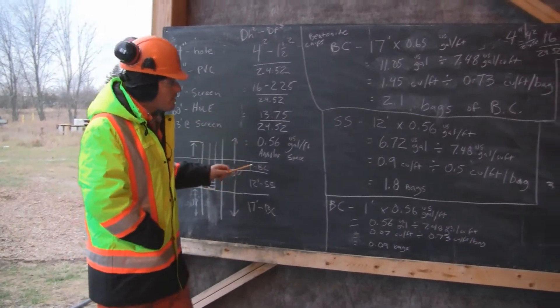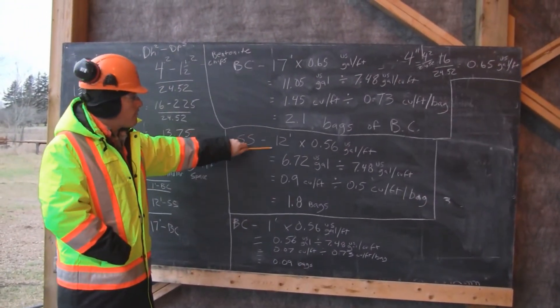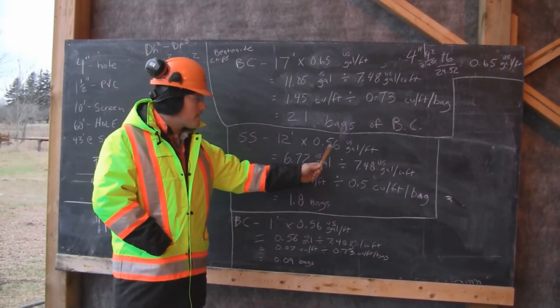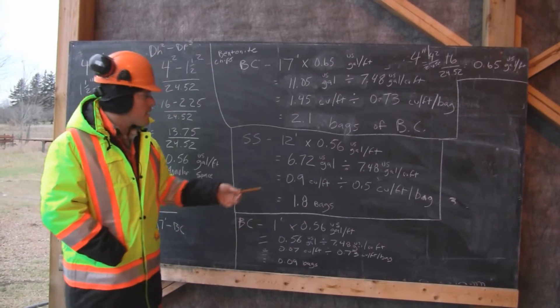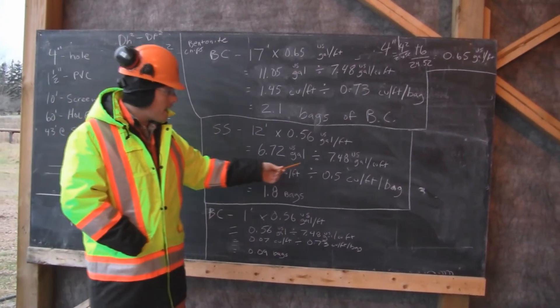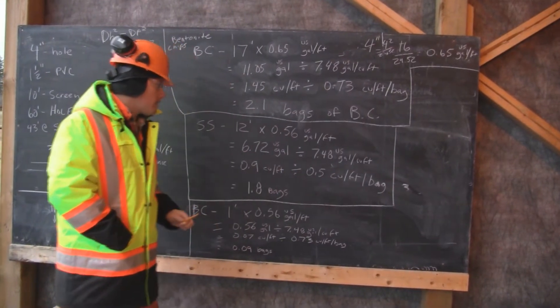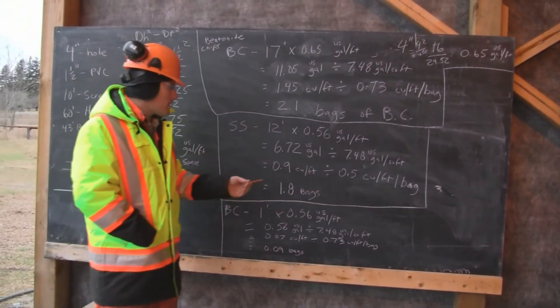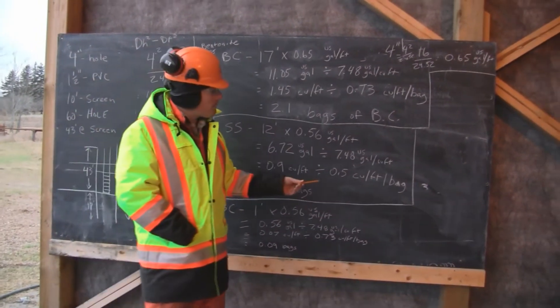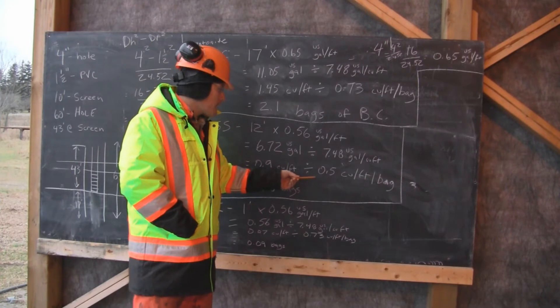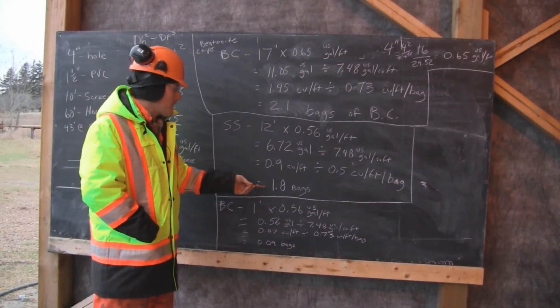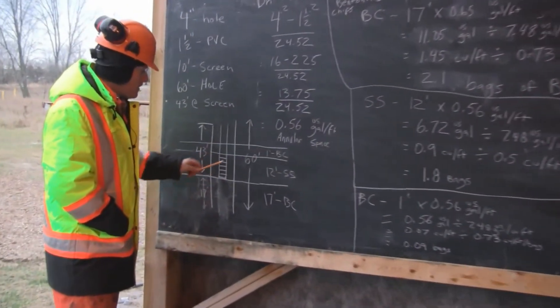We have 12 foot of annular space multiplied by 0.56 US gallons per foot. That gives us 6.72 US gallons divided by 7.48 US gallons per cubic feet, which gives us 0.9 cubic feet. There are 0.5 cubic feet per bag of silica sand, which results in a total of 1.8 bags of silica sand to fill this annular space.